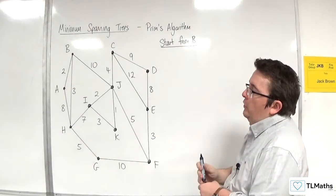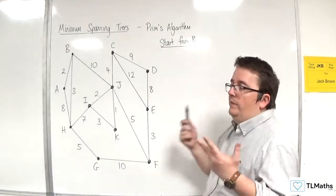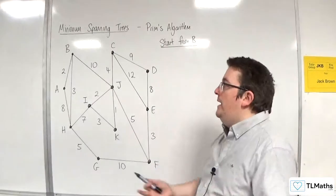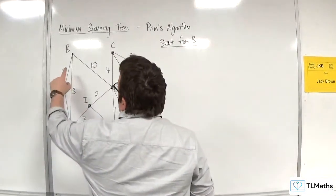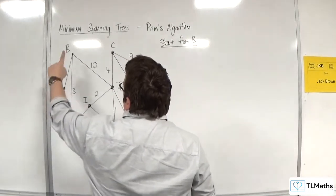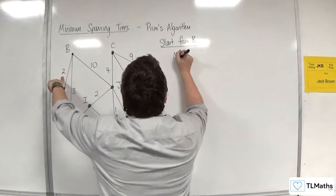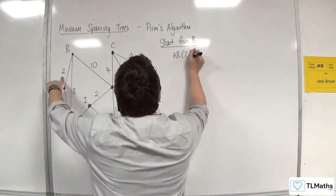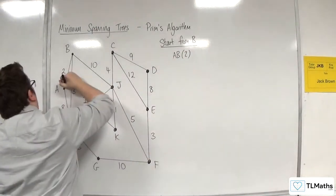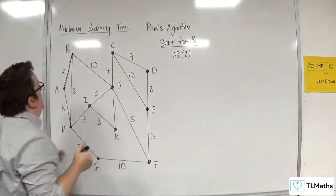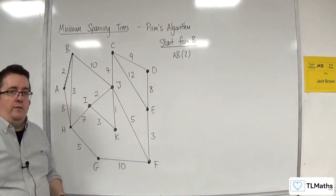So starting from B, I look for the edge of least weight coming from B, and that would be AB of 2. We had the choice of 2, 3, or 10, so 2 is the least, so AB 2 is the first edge picked, and I'm going to shade it so I keep track of which ones I've got.